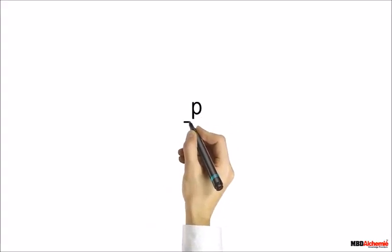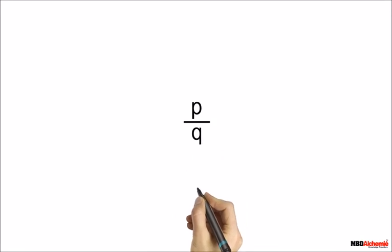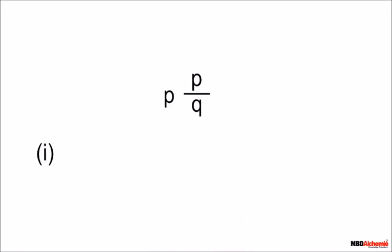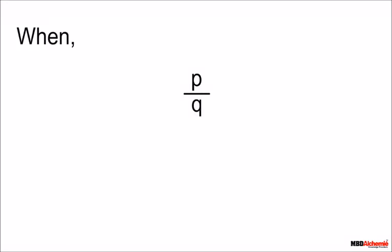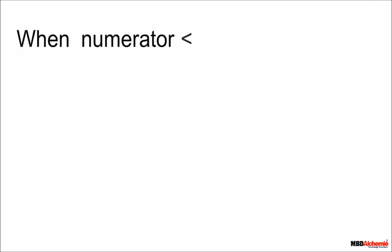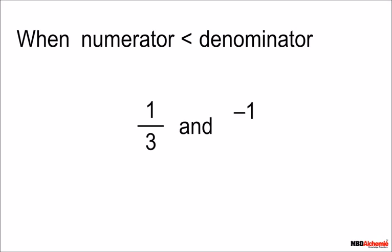To simplify things, rational numbers can be classified into three types: one, when the numerator is greater than the denominator; two, when the numerator is less than the denominator; three, when the numerator is equal to the denominator. Always remember, when we compare we see only the numeric value, and when the numerator is equal to the denominator the numeric value of the rational number is one.